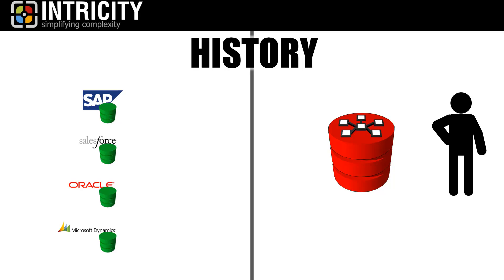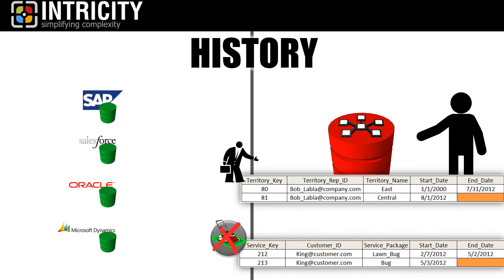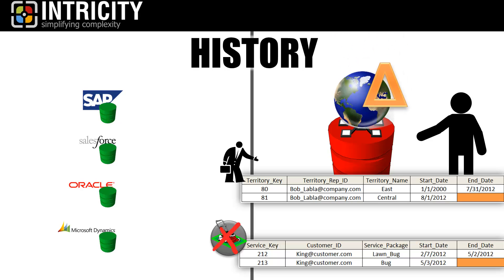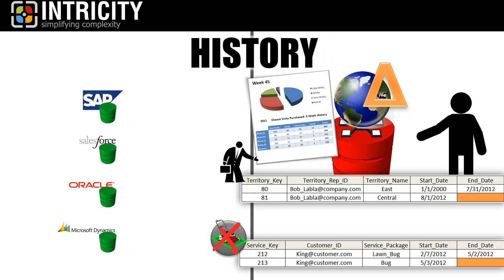When designing a data warehouse, we build in the capacity to capture historical snapshots when data changes. This way, when we are doing analysis and evaluating performance, you maintain the assumption that the world is changing around you. This means that the reports and analytics that come from the data warehouse are a far more accurate portrayal of what's happening in real life.